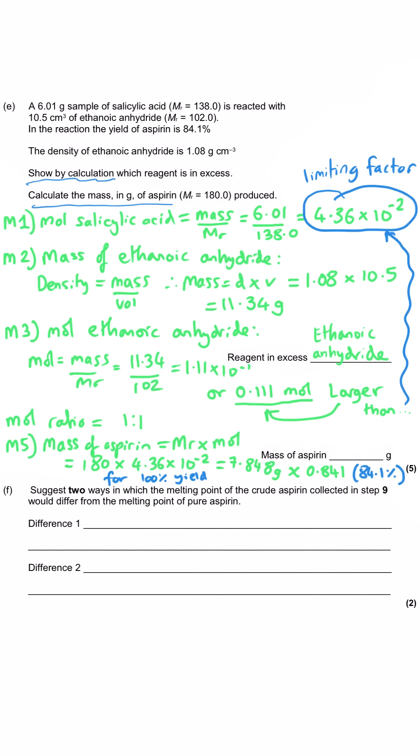And then that gives us a final mark of 6.59 grams of aspirin. And I would suggest at least two significant figures, but as a good rule of thumb, three. And the least precision that we've been given in the question is three significant figures. So that's really what we should report our answer to here. And so one mark for each of those steps for the total of five. Then the question says, suggest two ways in which the melting point of the crude aspirin, so by crude it means impure, collected in step nine, would differ from the melting points of the pure aspirin.